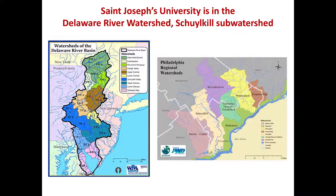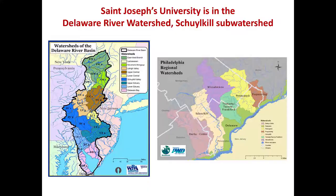Within Philadelphia, we belong to the Delaware River watershed, which can be divided up into sub-watersheds. The one we belong to is the Schuylkill watershed. So when we have precipitation, that water will eventually make its way to the Schuylkill River.